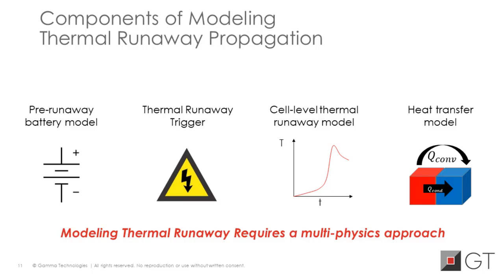Once the thermal runaway is triggered in the cell, we need a built-in thermal runaway model to capture the complex phenomena occurring during this process, such as chemical reactions, degradation, and gas production. Accurate models allow for a deeper understanding of the progression and severity of the runaway event. We also need a heat transfer model to look at how heat from the trigger cell dissipates to neighboring cells, and once those neighboring cells reach a certain temperature, they will also have their built-in thermal runaway model. The key takeaway is that accurately modeling thermal runaway propagation requires the integration of multiple physical domains — combining thermal, electrical, and chemical aspects into a multi-physics framework.